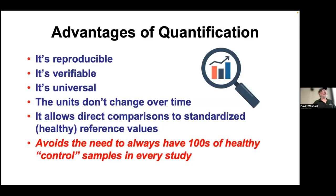When you quantify, as analytical chemists have known for many years, it's reproducible—you have a value quoted in nanomolar, micromolar, or millimolar, so it's verifiable. These units are universal: anyone from any country or discipline knows what they mean, and the units don't change over time. You can make direct comparisons to standard reference values. The HMDB has thousands of these reference values, meaning you don't always need hundreds of healthy control samples in every study. Reference values are published for different age groups, population groups, and ethnic groups.